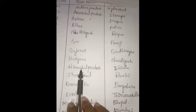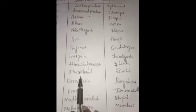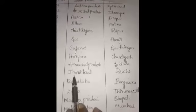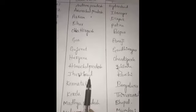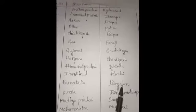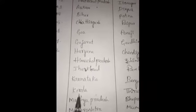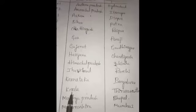Himachal Pradesh state's capital is Shimla. Jharkhand state's capital is Ranchi. Karnataka state's capital — you are well familiar — is Bengaluru. Next, Kerala: the capital of Kerala is Thiruvananthapuram.